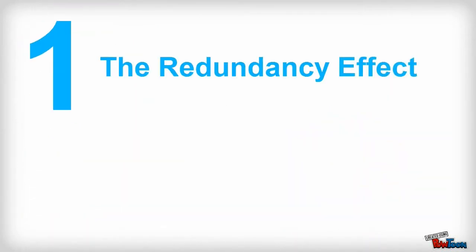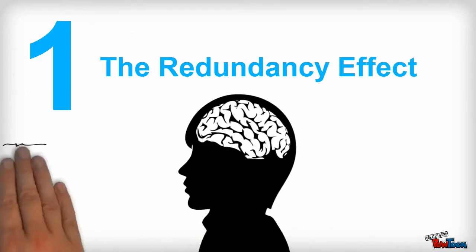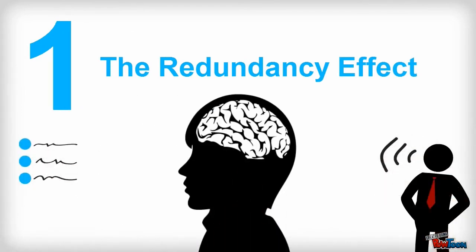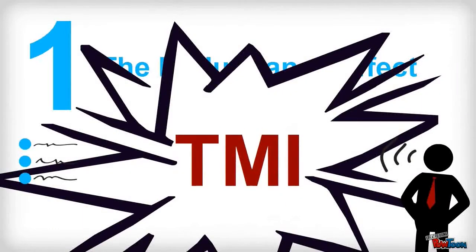Problem number one, the redundancy effect. Turns out our brain isn't able to process the same information efficiently when you see and hear the same thing at the same time. It's too much info at once.